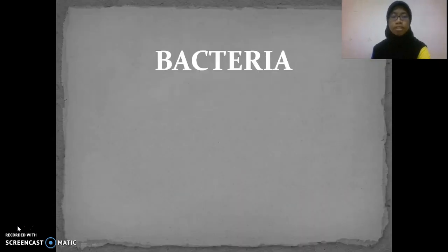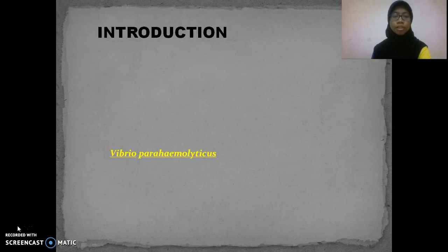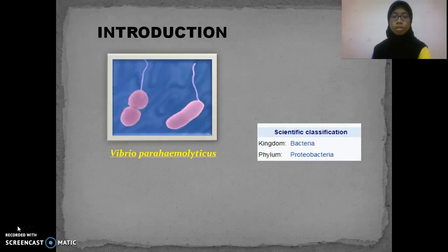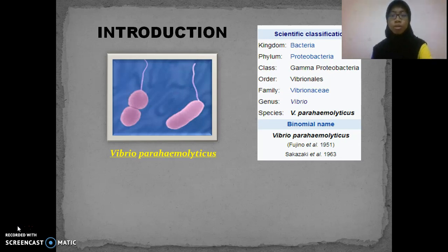For this screencast, I have chosen a species of bacteria which is named Vibrio parahaemolyticus. For the scientific classification, it was from the kingdom Bacteria, phylum Proteobacteria, class Gamma Proteobacteria, order Vibrionales, family Vibrionaceae, genus Vibrio, and the species name is V. parahaemolyticus.